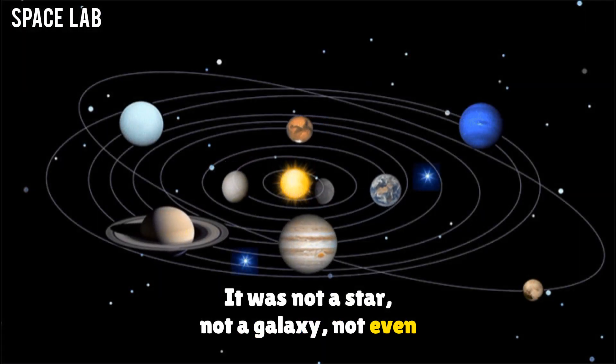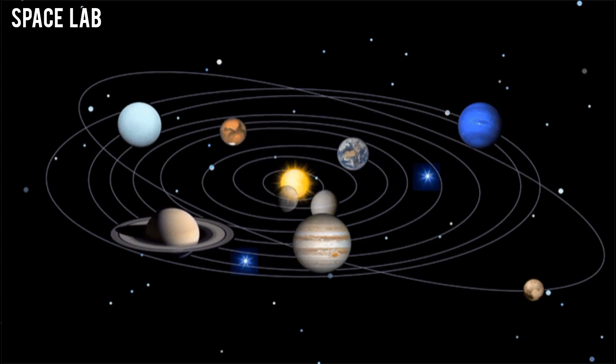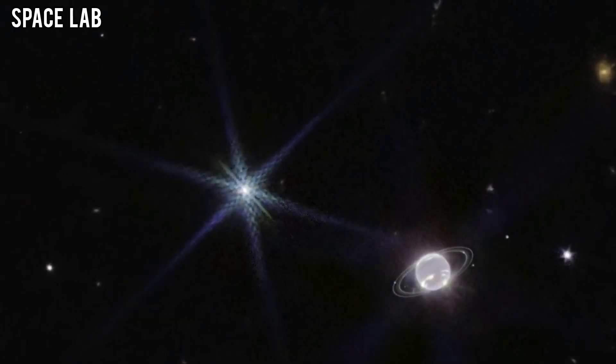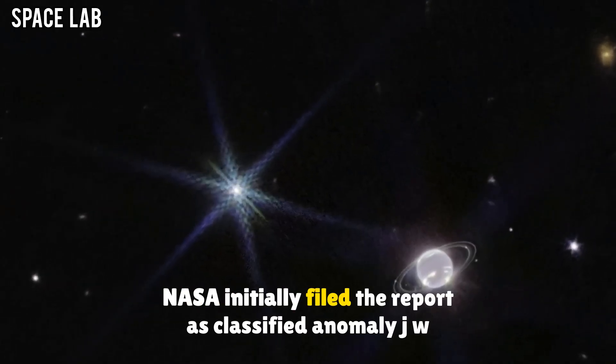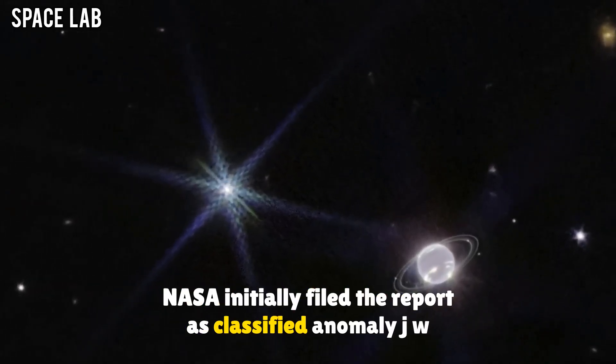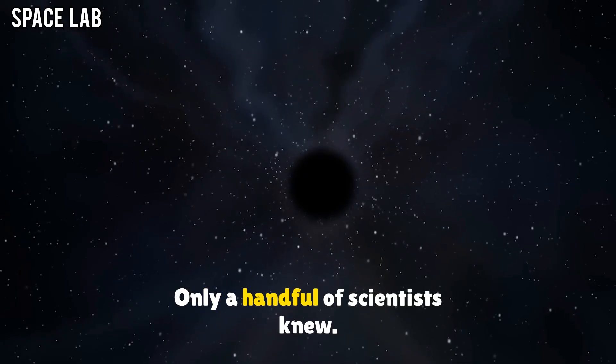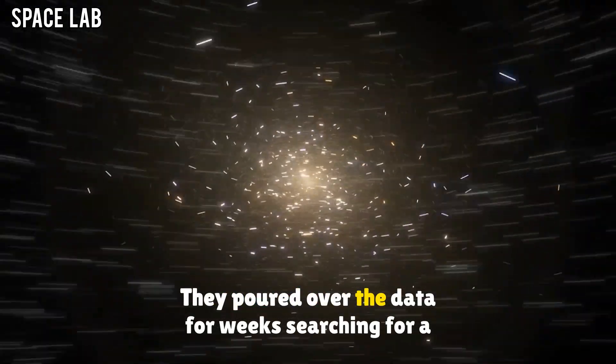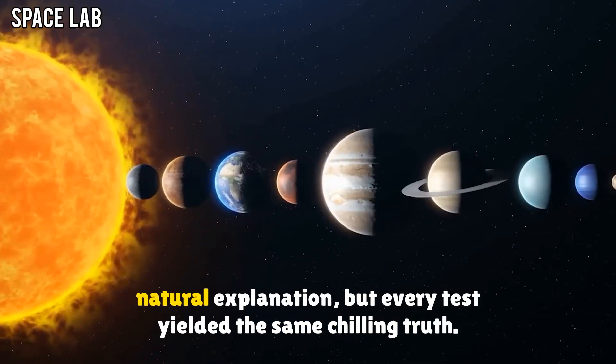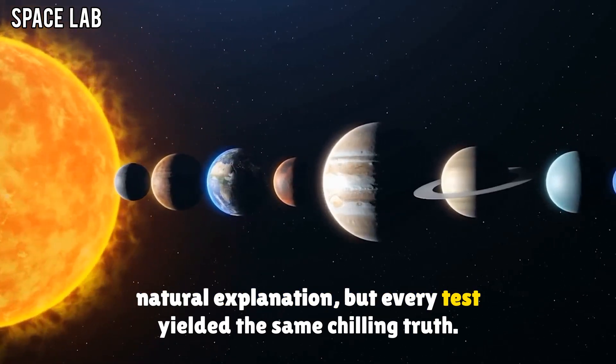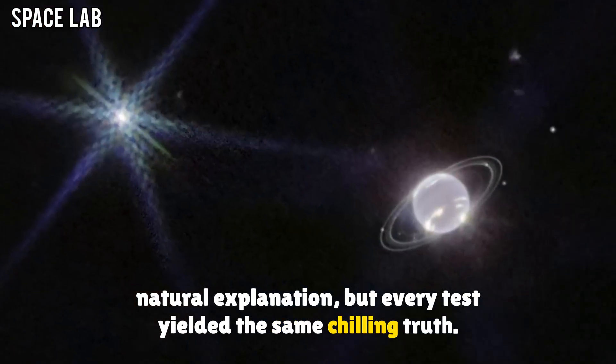It was not a star, not a galaxy, not even a pulsar's rhythmic beat. This was transmission. NASA initially filed the report as classified anomaly JW-47. Only a handful of scientists knew. They pored over the data for weeks, searching for a natural explanation.